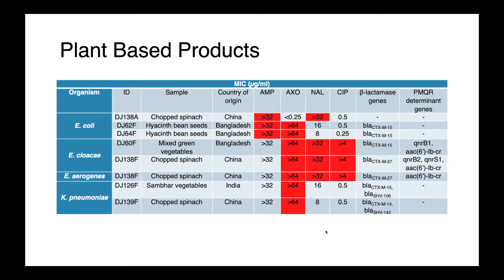Looking at our gram negatives resistant to third-generation cephalosporins, E. coli was found in chopped spinach and hyacinth bean seeds from China and Bangladesh producing CTXM-15. We had Enterobacter cloacae and aerogenes with CTXM-15 and 27, as well as plasmid-mediated quinolone resistance genes, and then CTXM and SHV-producing Klebsiella pneumoniae from a variety of other vegetable products.